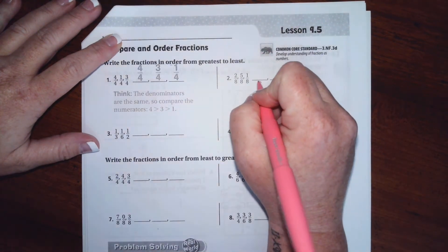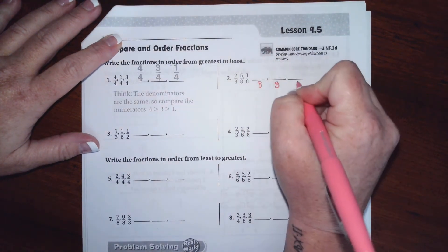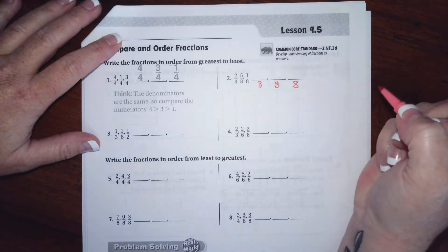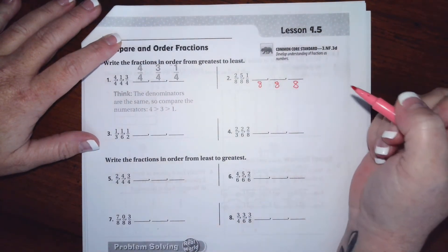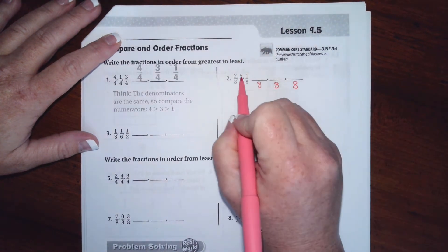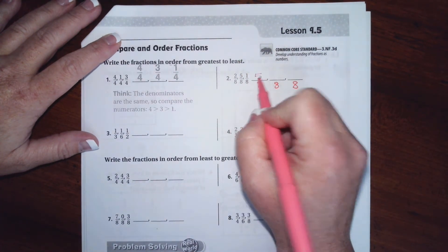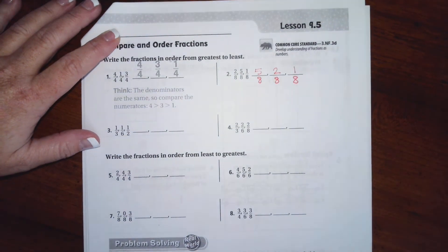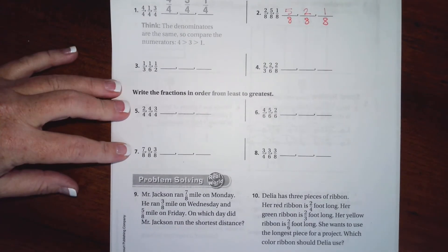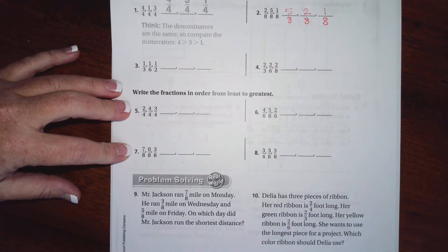Now we need to write the number that's the biggest first. Well, the biggest one here is a five, now a two, then a one. So before I do all of my other ones, I'm going to go ahead and just find the ones that have same denominators.